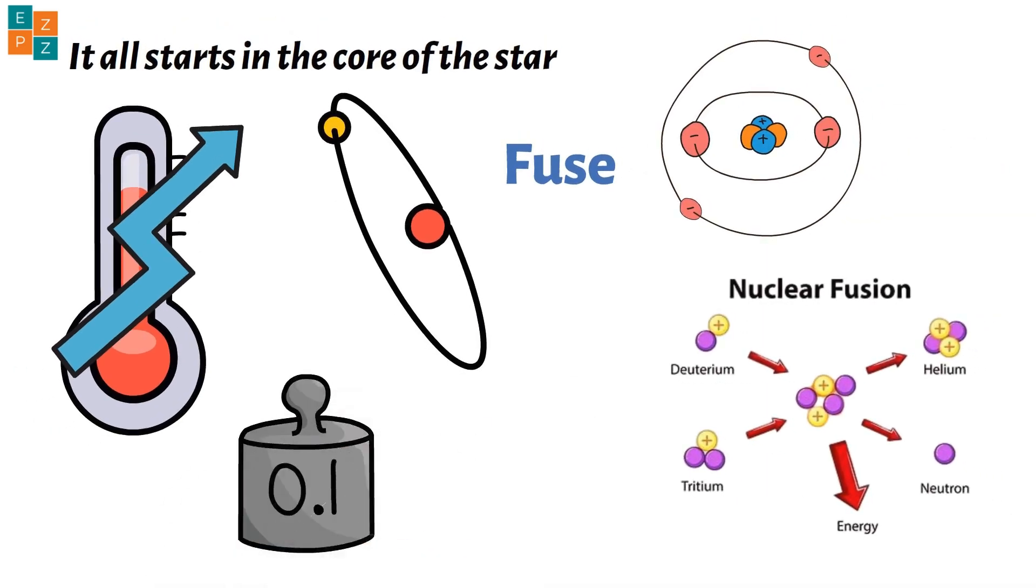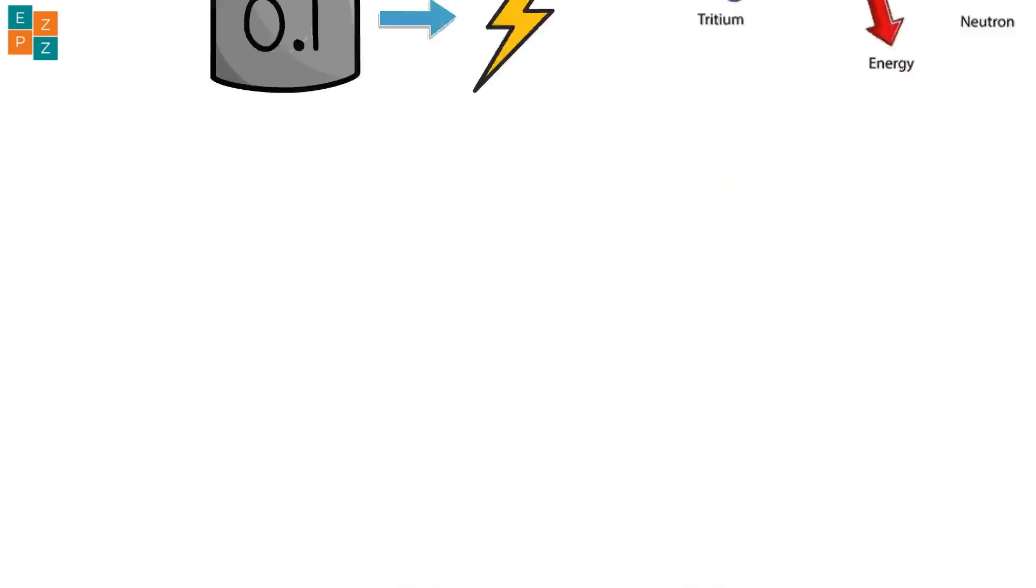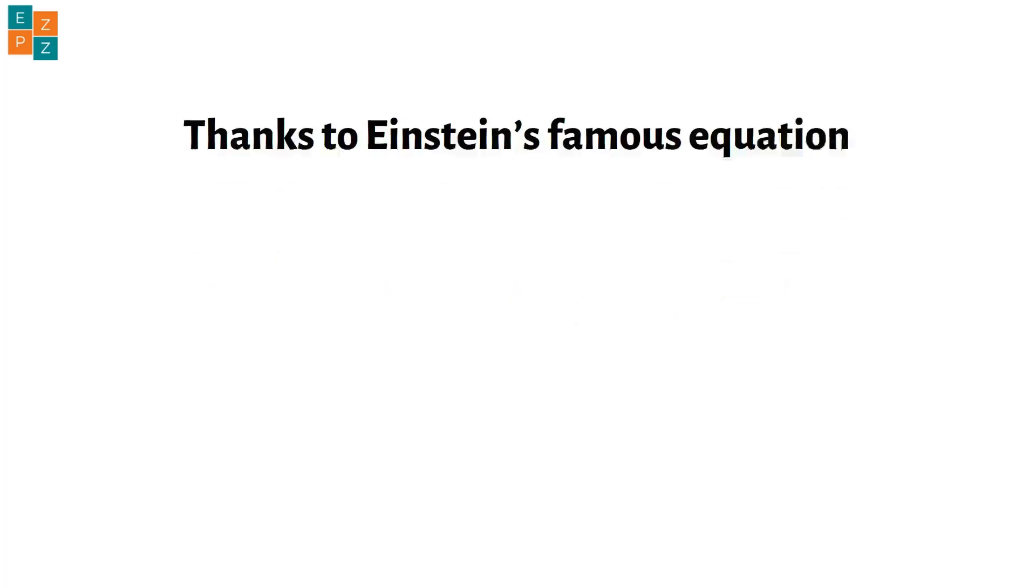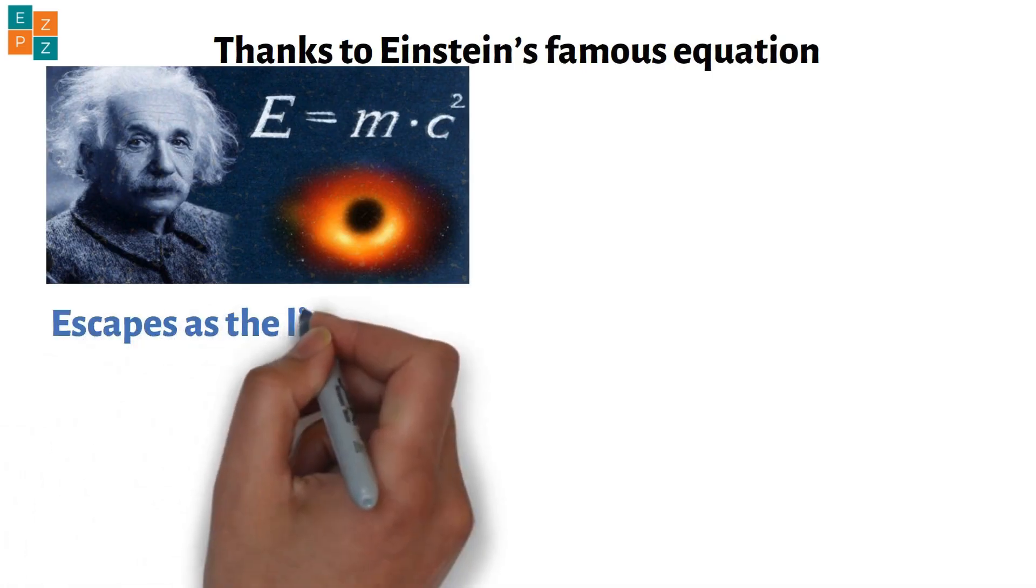During fusion, a tiny bit of mass is converted into enormous amounts of energy, thanks to Einstein's famous equation, E equals mc squared. This energy travels to the star's surface and escapes as the light and heat we see.